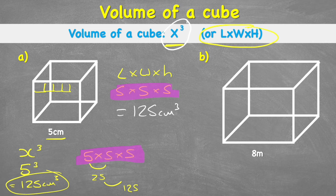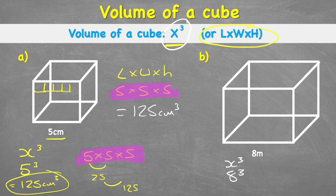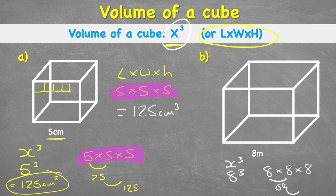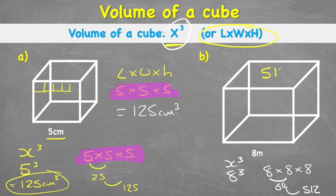Let's look at the second example. Eight metres this time is our measurement. So we start with our formula, X cubed, and input the information we know, which is eight. So we have eight cubed. Therefore we're looking at eight times eight times eight. Eight eights are 64, and 64 times eight is 512. So our answer to B is 512 metres cubed.